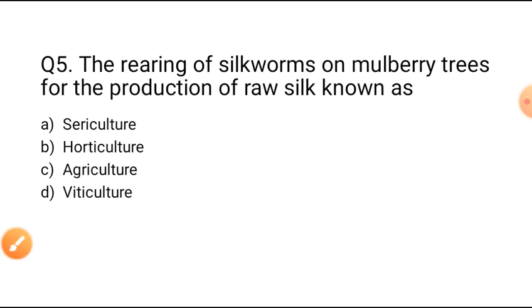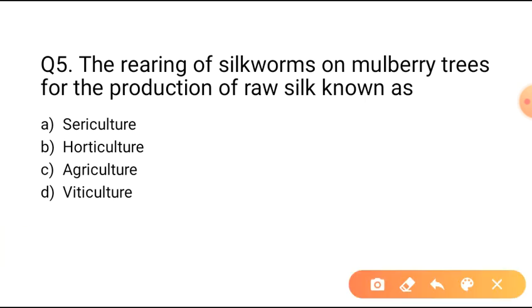Question number five: The rearing of silk worms on mulberry trees for the production of raw silk is known as — Option A: Sericulture. Option B: Horticulture. Option C: Agriculture. Option D: Viticulture. Rearing of silk worms on mulberry trees is known as sericulture, so Option A is the correct answer.